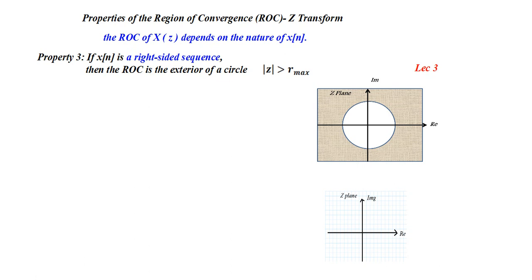Property 3: for a right-sided sequence, which is also an infinite duration sequence, the ROC is the exterior of a circle. Mathematically, |z| > r_max, where r_max is the maximum magnitude among all poles. For example, if there are poles at r1 and r2, the maximum value is r_max and the ROC is exterior to that circle.